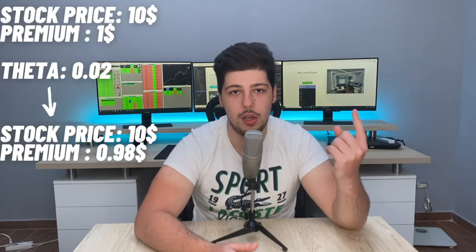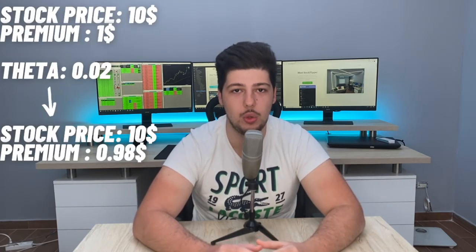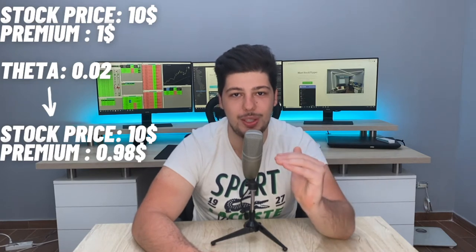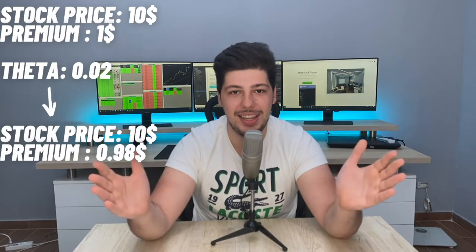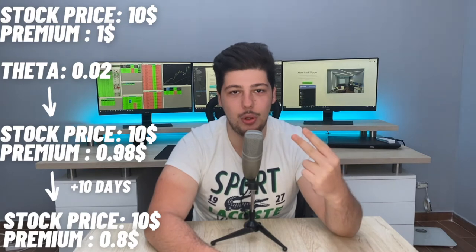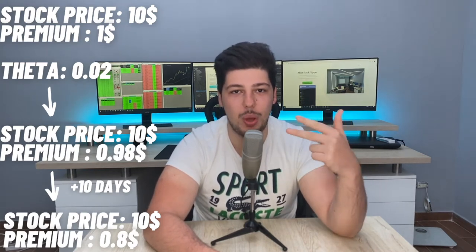Theta is the time decay — it shows how much the option will lose its value after each day. If theta is minus 0.05, the option loses 0.05 after each passing day. That's why when you sell options like selling puts or calls, time works in your favor. If you buy options, time is working against you. For example, if the stock is $10 and the option price is $1 with theta equal to minus 0.02: if the next day the stock stays at the same price, the option decreases by 0.02. After 10 days at $10, that's 0.02 times 10 equals 0.2 — the option drops from $1 to $0.80, a 20% loss.